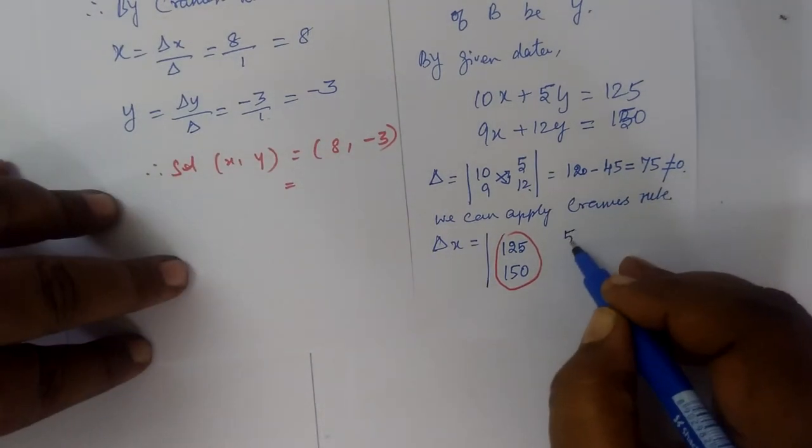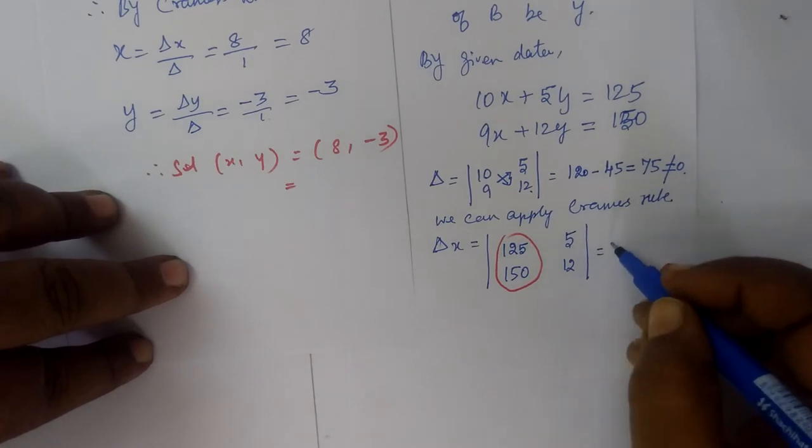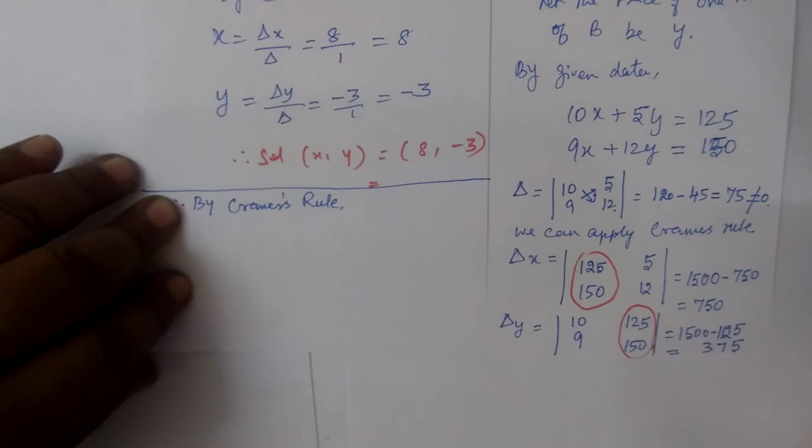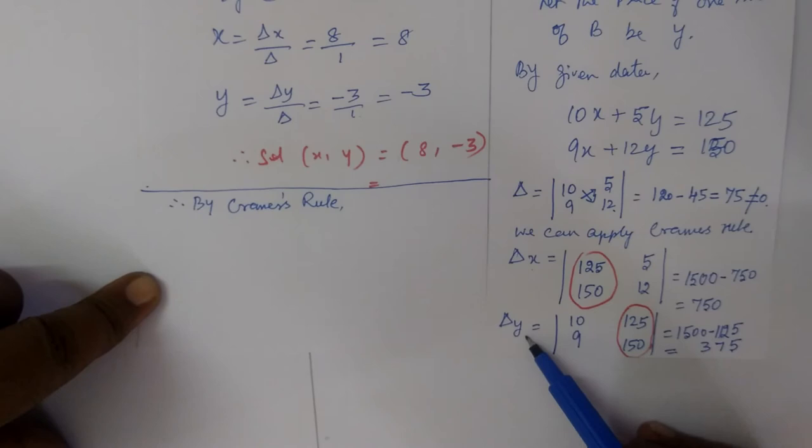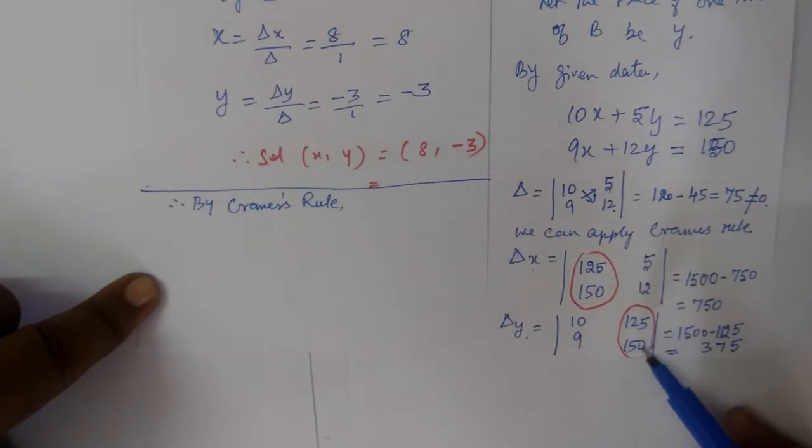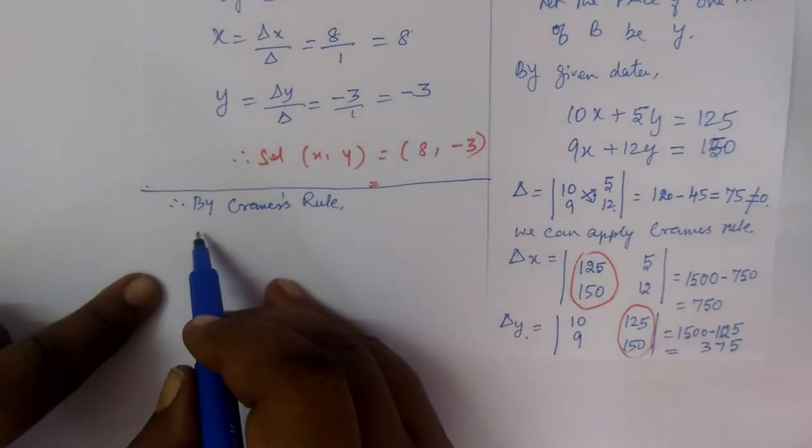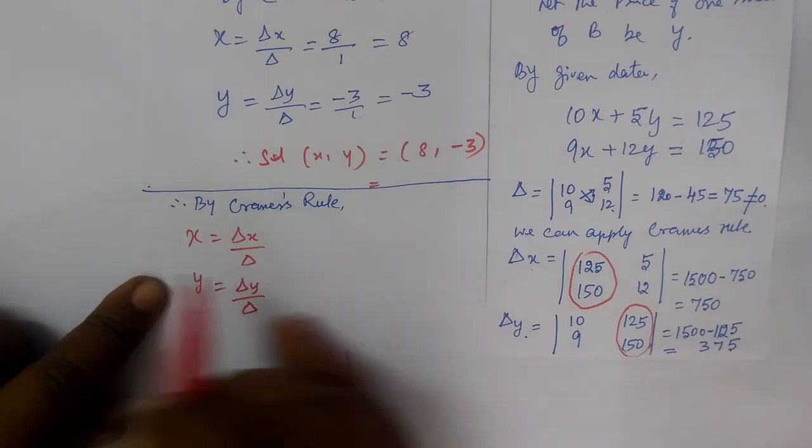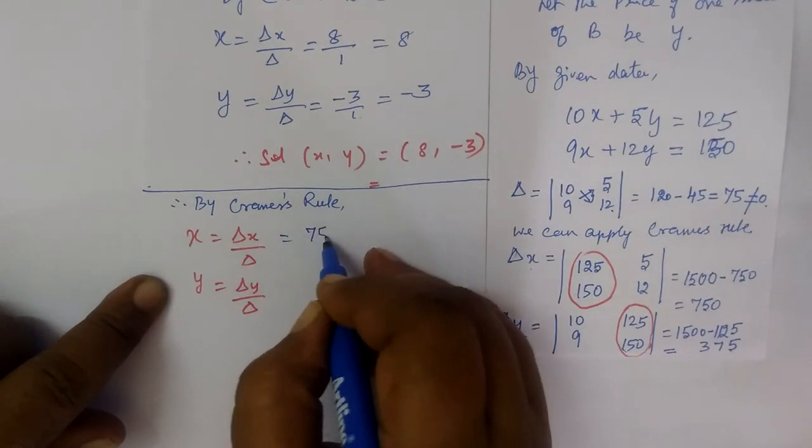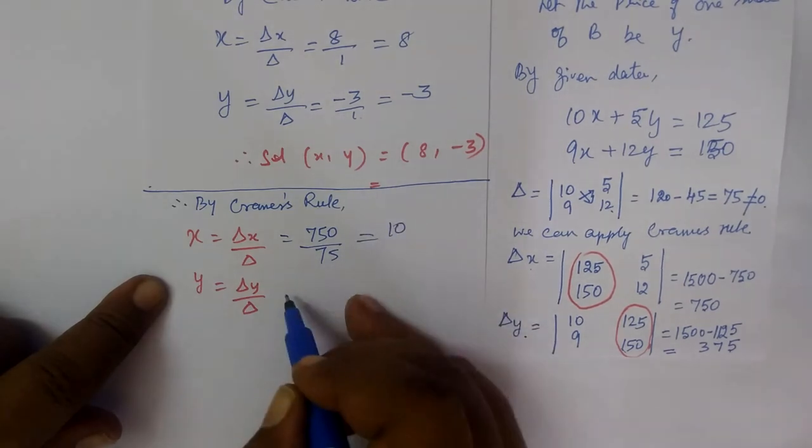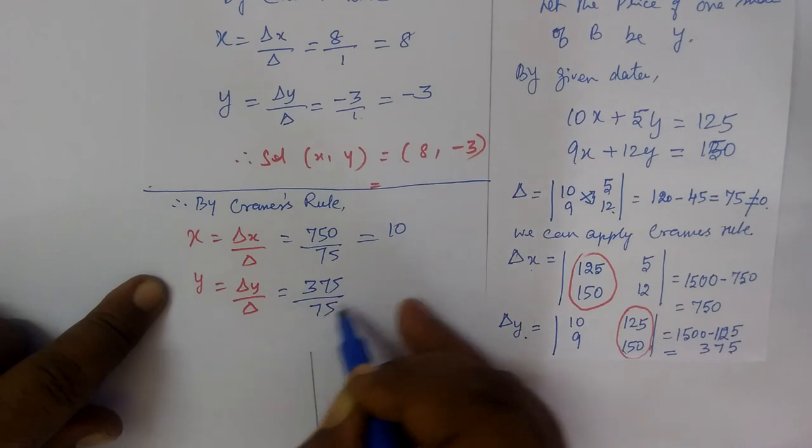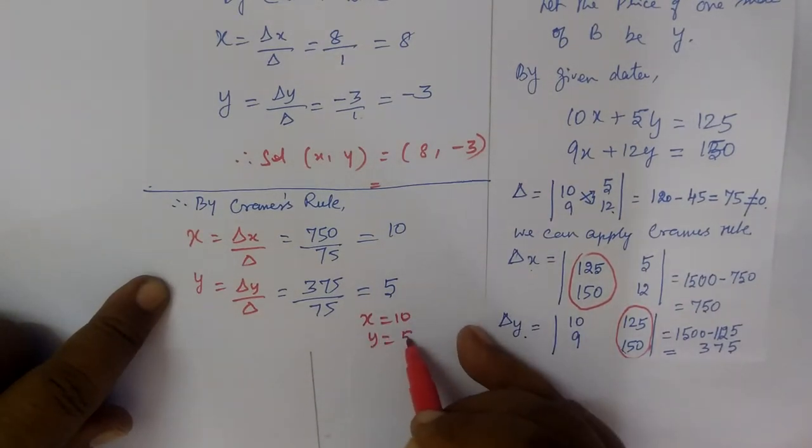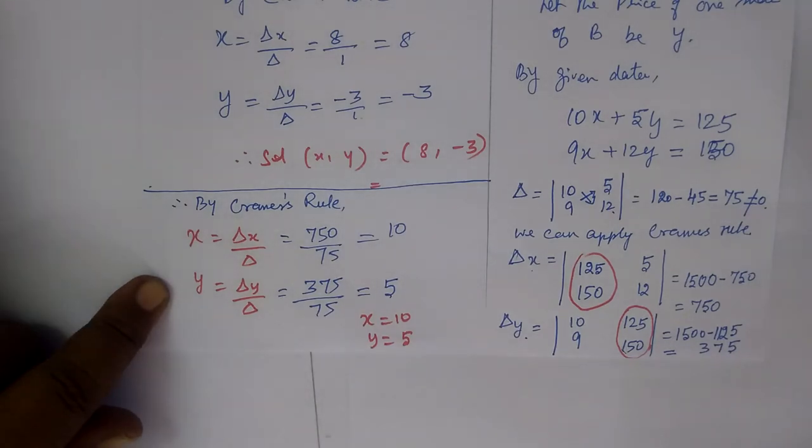Del Y: here we place constants in the Y position. By Cramer's rule formula, X equals del X by delta, Y equals del Y by delta. Del X is 750, delta is 75, so X equals 10. Similarly, we get Y equals 5. So the solution is X equals 10 and Y equals 5.